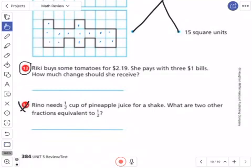Alright, Riki buys some tomatoes for two dollars and 19 cents. She pays with three one dollar bills. How much change should she receive? So remember, this is where you are basically pretending you go into the store, you get some tomatoes, they cost two dollars and 19 cents. In your pocket you have three one dollar bills. How much change should you receive? So it's like the money that you get back. So you have to think, am I going to add those two numbers or subtract those two numbers?